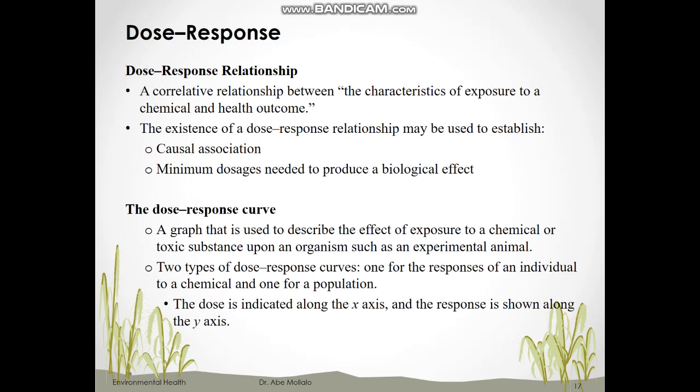Dose-response relationship is a correlative relationship between exposure to a dose and a health outcome or response. If we increase or decrease exposure or dose, the dose-response relationship investigates whether it leads to a systematic change in health outcome. If we find a dose-response relationship between exposure and outcome, it indicates causality and we can find the minimum dose to produce biological effects. We can study this using a graph that describes systematic changes in health outcome for living organisms such as animals. There are two types of dose-response curves: one for a single individual and one for a population.